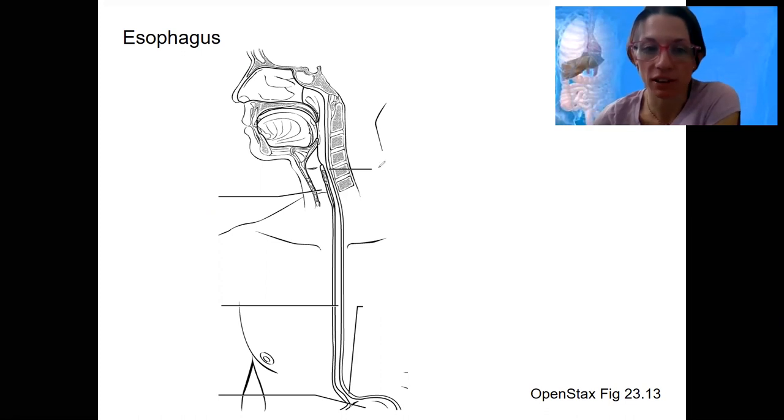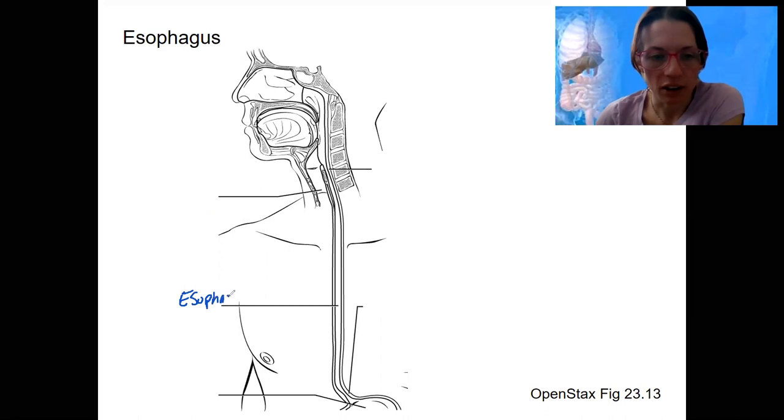So first the anatomy of the esophagus. Well, this is it. So this tube here is the esophagus. Below that there's the stomach. That's where we're trying to go.